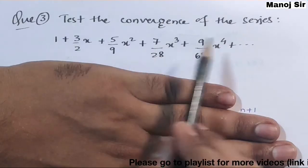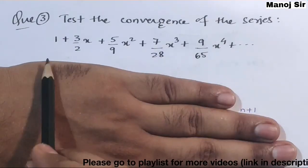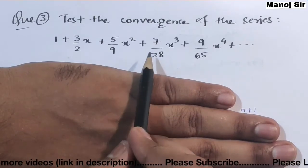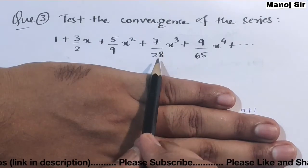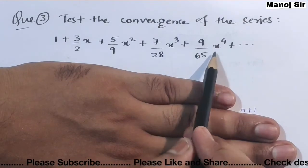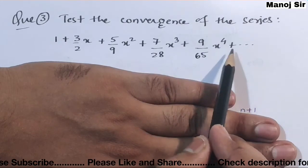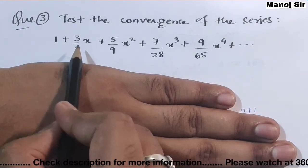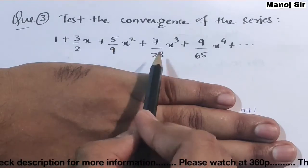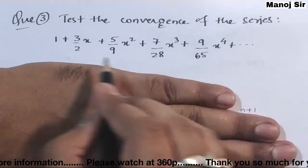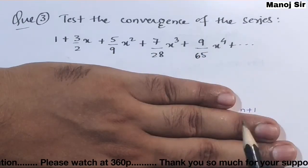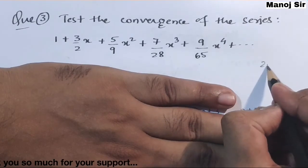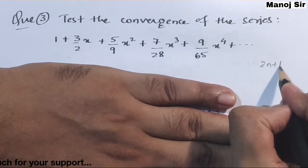The question says: test the convergence of the series 1 + 3/(2x) + 5/(9x²) + 7/(28x³) + 9/(65x⁴) + ... If you see the numerator part — 1, 3, 5, 7, 9 — these are all odd numbers. So we can represent odd numbers in terms of N as 2N + 1.